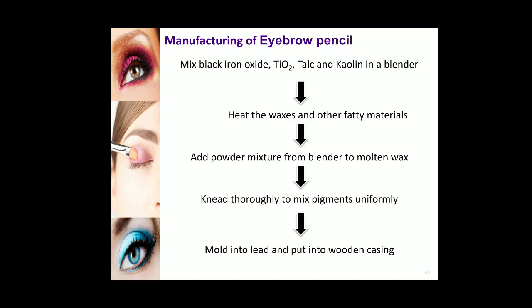The waxes are melted and the pigment is dispersed into the molten mass using a triple roll mill. The manufacturing of eyebrow pencils includes mixing black iron oxides, titanium dioxide, talc, and kaolin in a blender. They are then heated to melt all the waxy materials. The powder mixture is added to the blender with molten wax and mixed to disperse the pigment uniformly. They are passed through a homogenizer, then moulded and put into a wooden casing.